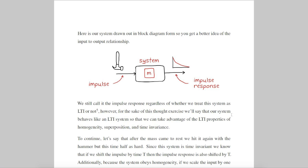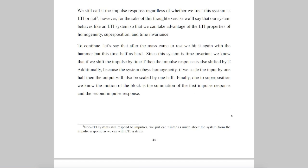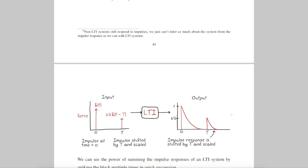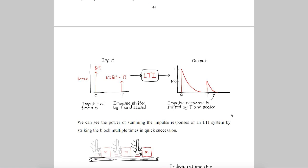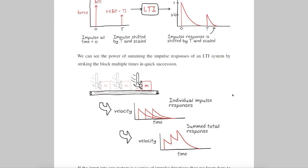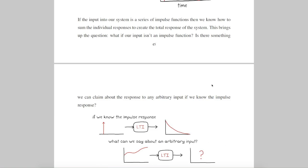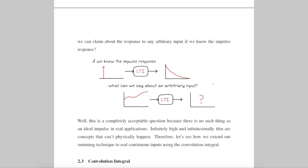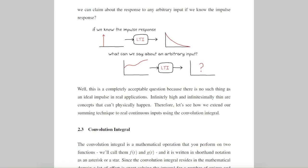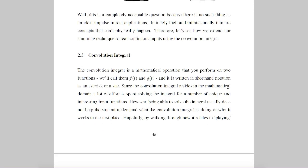Now, this is kind of neat because if our system is LTI, then we know we can apply two impulses of different magnitudes, and we can just scale and sum the individual impulse response outputs to get the total response of the system. So if we hit the block three times in quick succession, the response might look something like this. The problem is you can't generate a perfect impulse in real life, so the question is how can we use this knowledge to determine the response to an arbitrary input? And we do that with the convolution integral.